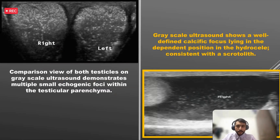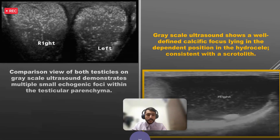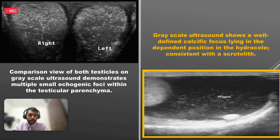The first image shows microlithiasis, where multiple tiny echogenic foci are scattered throughout the testicular parenchyma — these are intratubular calcific foci. The second image shows a scrotolith: an echogenic focus with posterior acoustic shadowing, mobile within the scrotum and located extratesticular but intrascrotal. It can be seen in post-inflammatory conditions and is also known as a scrotal pearl or scrotal calculus.